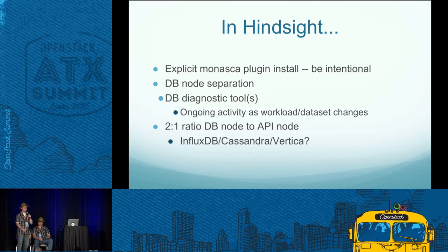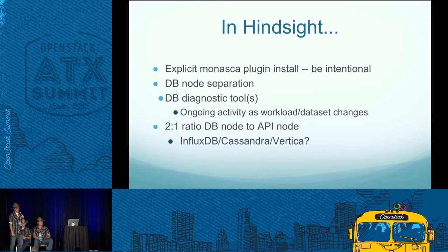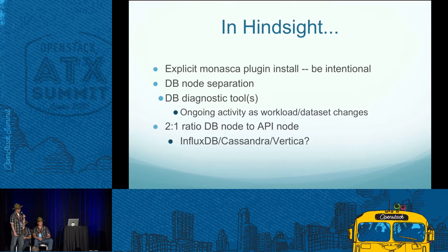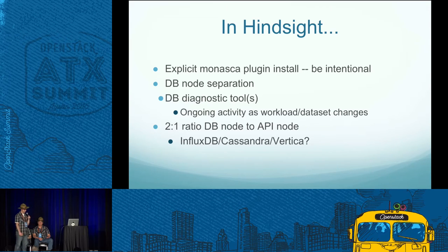If you installed Monasca today, you'd face the question: which database do we use? InfluxDB is now more stable than when we started. We're kicking the tires on it, but we have a great track record with Vertica now — it's stable and it performs. The upstream community is also talking about supporting Cassandra. Honestly, if we were doing it today we'd just have to evaluate all three and see where we go from there.